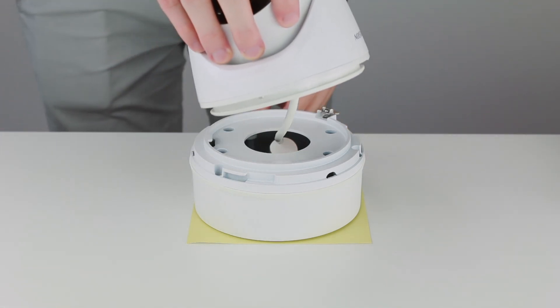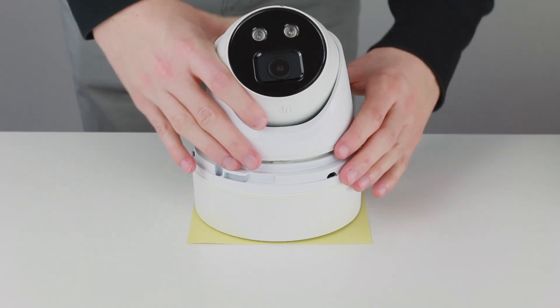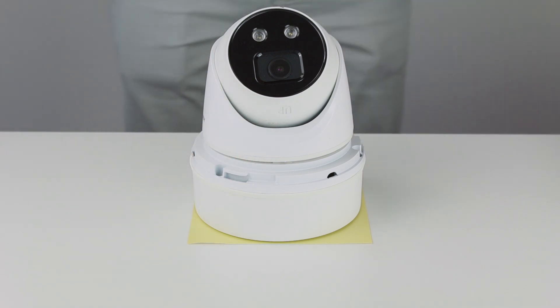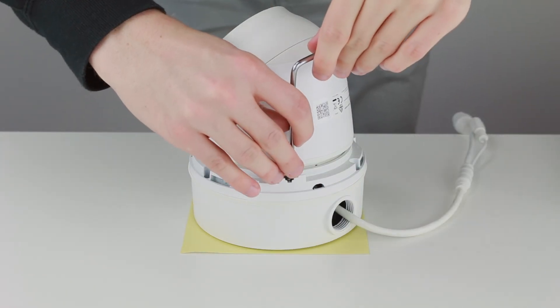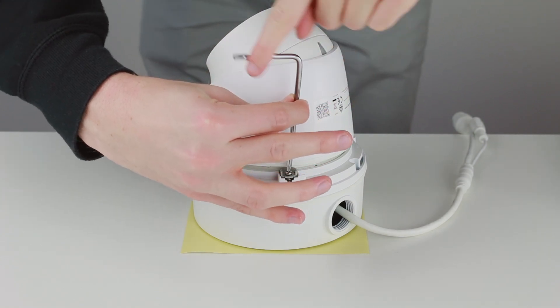With the base plate securely mounted you can now slot the ball and bracket of the turret camera back into the base plate and move the small locking plate back into position. Once you have adjusted the camera into a position that covers the area you want you can tighten the locking screw to lock the camera in place.